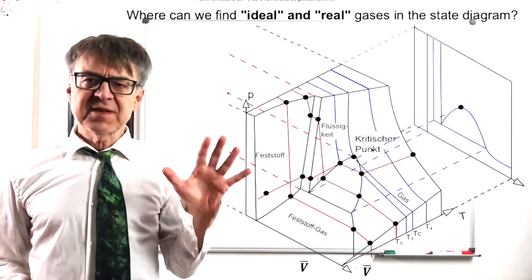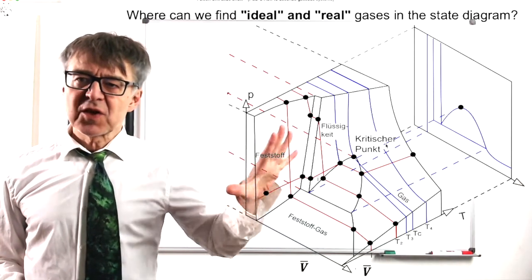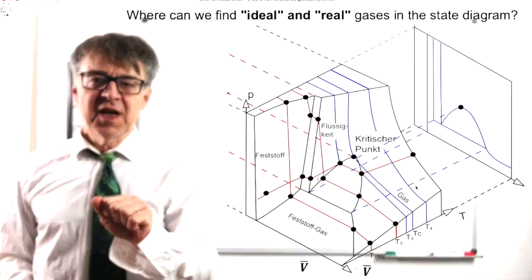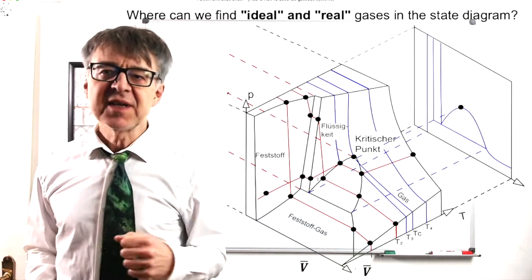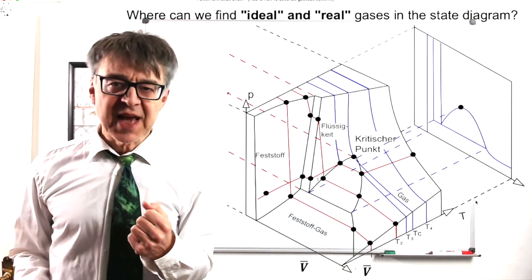Here the phase diagram surface is continuously curved and it can be described very easily, namely by the ideal gas equation.